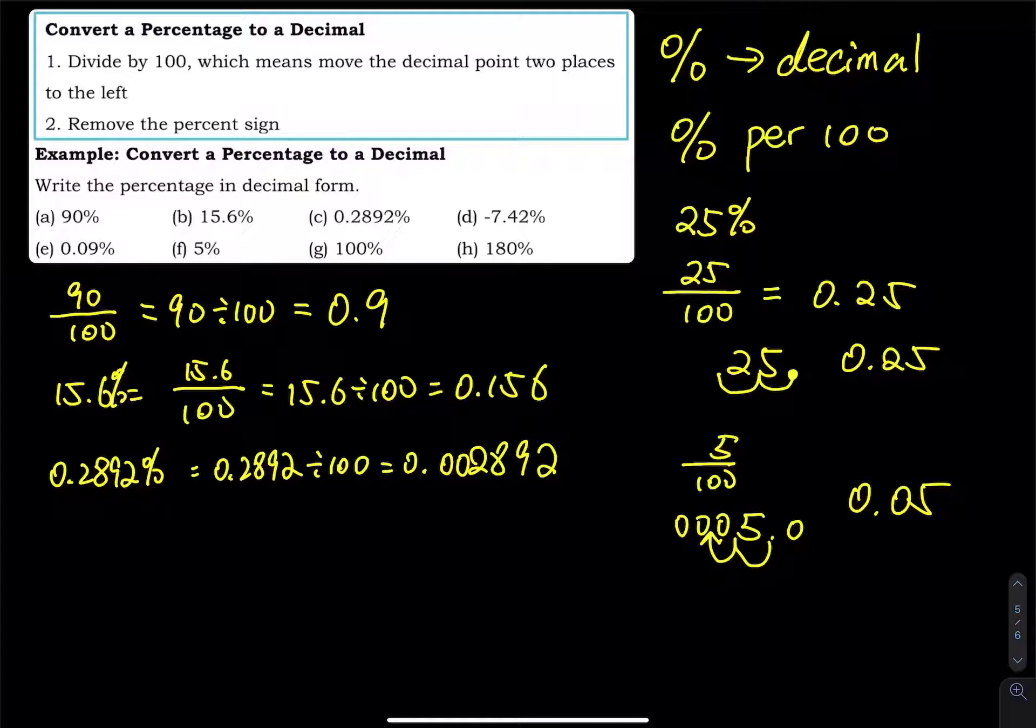Oh, actually, I put an extra zero in there. Let me correct this. Because the decimal point was right here, right? The decimal point was... Oh, actually, the last one was right here. So the decimal point was right here, right? One step, two step, right?